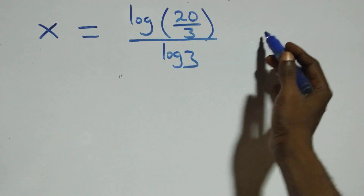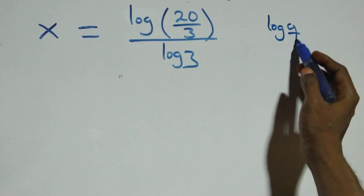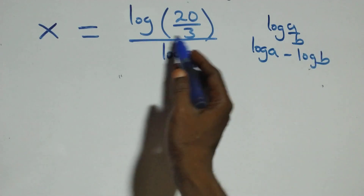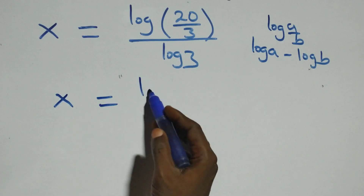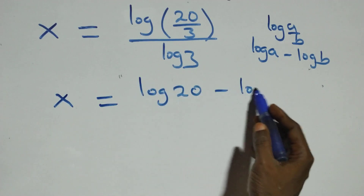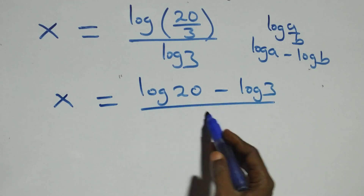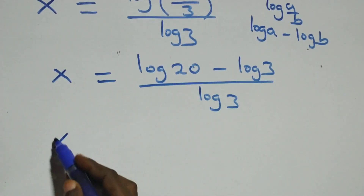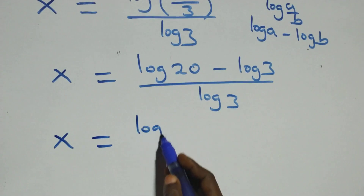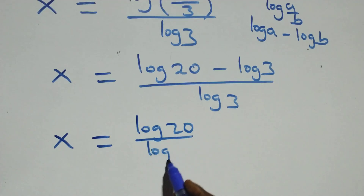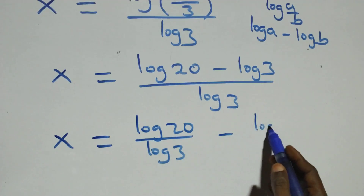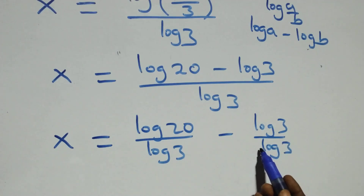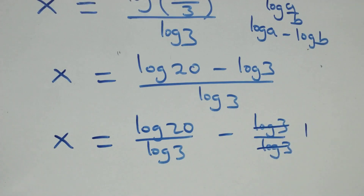This follows from the rule that log(a/b) is the same thing as log a minus log b. So here we have x equals log 20 over log 3, and we separate this into two fractions: log 20 over log 3 minus log 3 over log 3. The log 3s cancel, leaving 1.